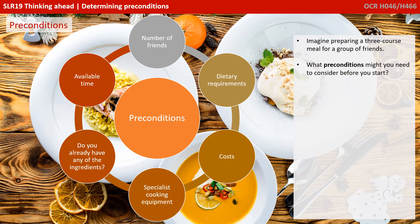Are there any specific dietary requirements? Is someone gluten intolerant? Are there any vegetarians? Do you have a fixed budget or cost in mind? Do any of the recipes require specialist cooking equipment, and do you own those, like a steamer? Do you already have any of the ingredients you need to keep the cost down? And how much time do you physically have to design and prepare this three-course meal? All of these are reasonable preconditions which would affect the contents of the meal that you chose to create.